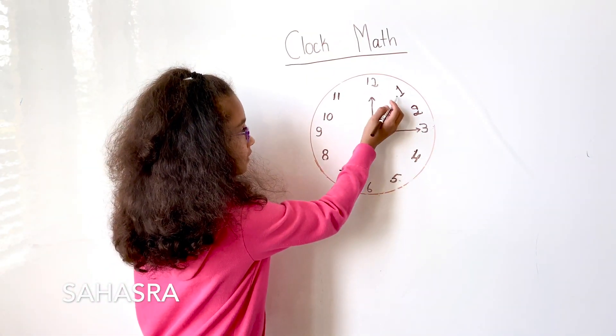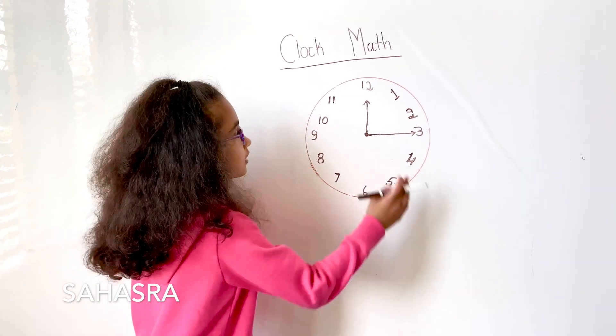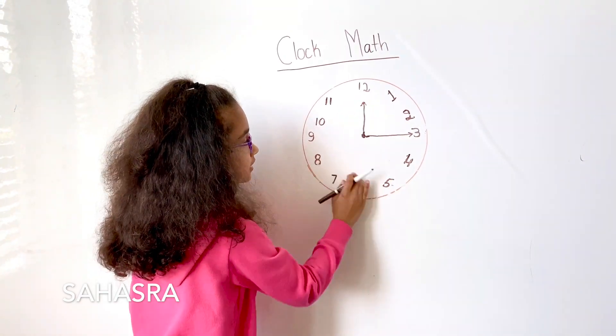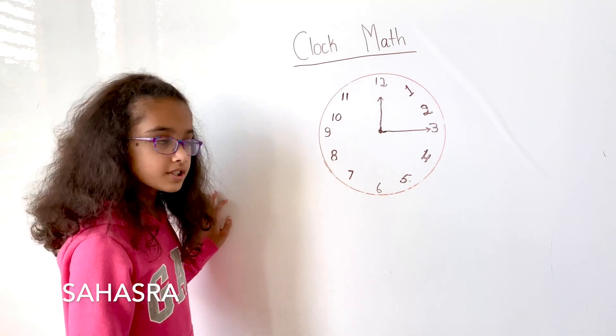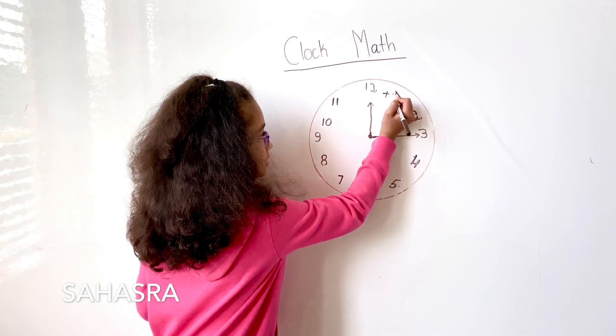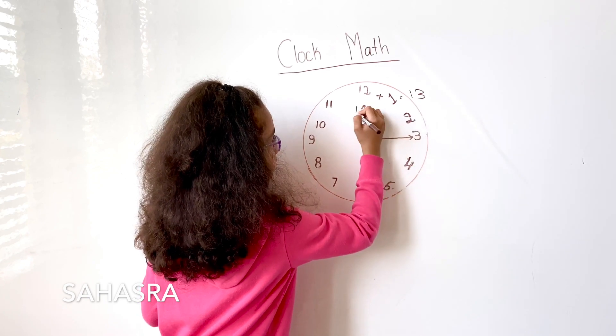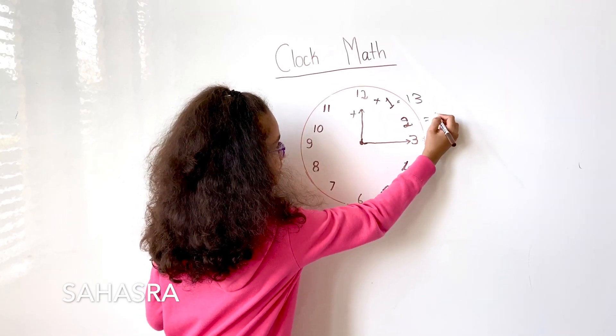Everyone knows that 12 plus 1 equals 13. But lots of other things on this clock also equal 13. 11 plus 2 also equals 13.